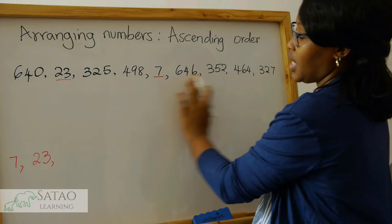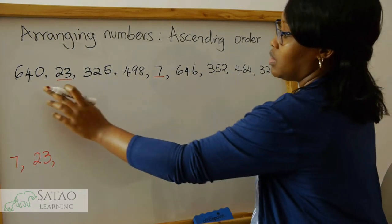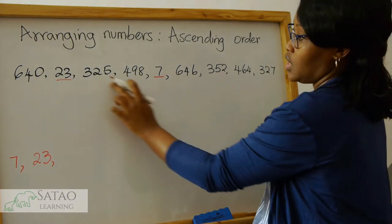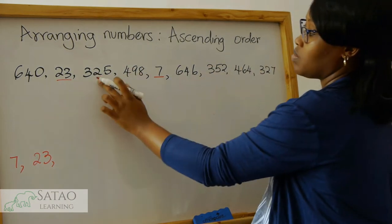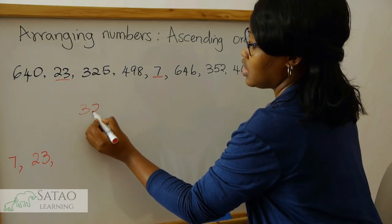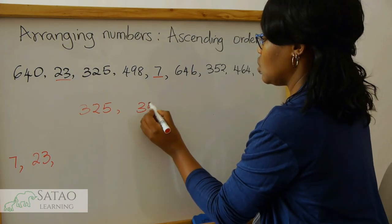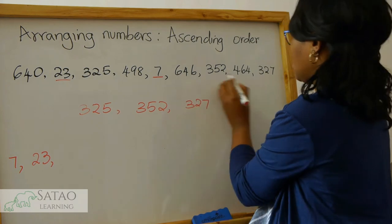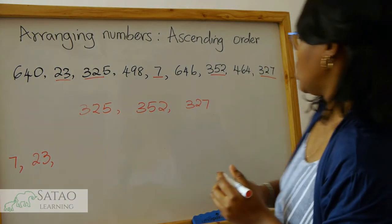So when we are looking at the three-digit numbers, we first begin by looking at numbers that begin with one — none; two — none; three — we have three numbers beginning with the digit three. So that's three hundred and twenty-five, three hundred and fifty-two, and three hundred and twenty-seven.